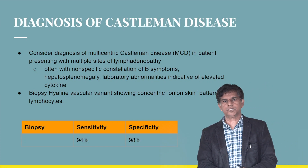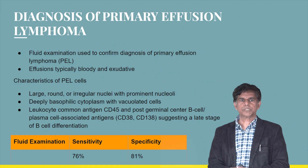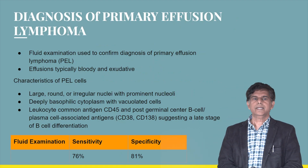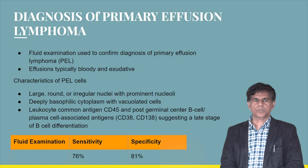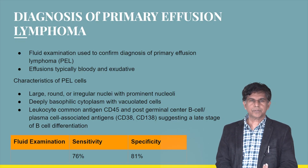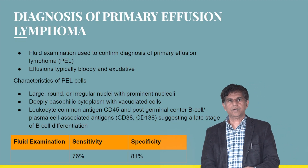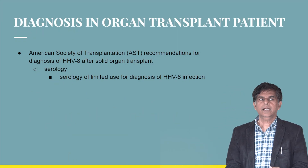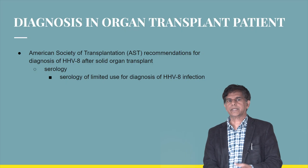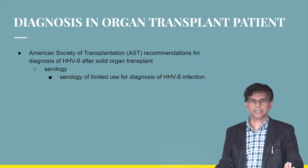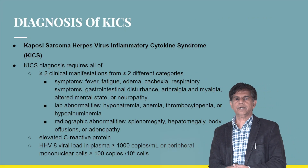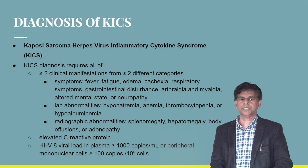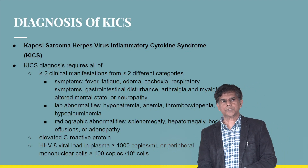For primary effusion lymphoma, effusion cells are large with round irregular nuclei and deeply basophilic cytoplasm; sensitivity is approximately 76–81%. In organ transplant patients, serology has limited diagnostic utility. For Kaposi Sarcoma inflammatory cytokine syndrome diagnosis, there must be greater than two clinical symptoms from two different categories — including fever, fatigue, edema, cachexia, respiratory symptoms, or gastrointestinal disturbance — plus lab abnormalities such as hyponatremia, anemia, thrombocytopenia, hypoalbuminemia, elevated C-reactive protein, and plasma viral load greater than 1,000 copies.